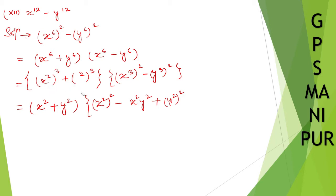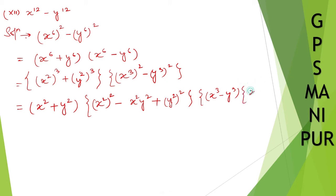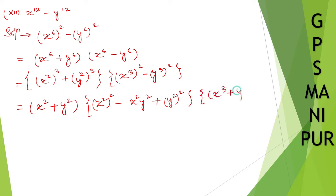Now for the next part, we have a squared minus b squared. Let us use that formula. So a squared minus b squared equals a plus b times a minus b.